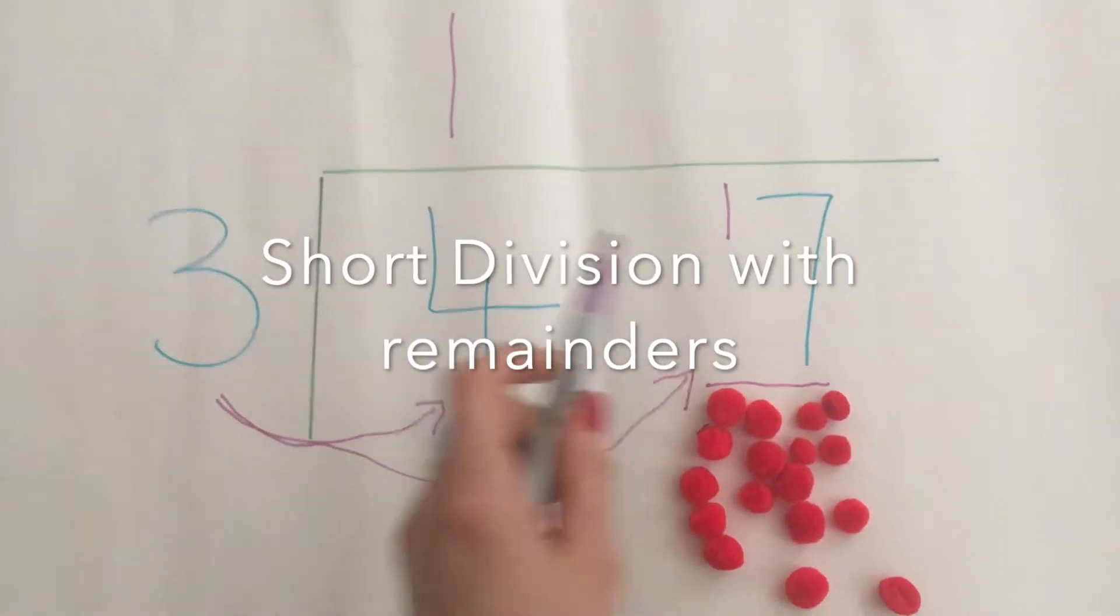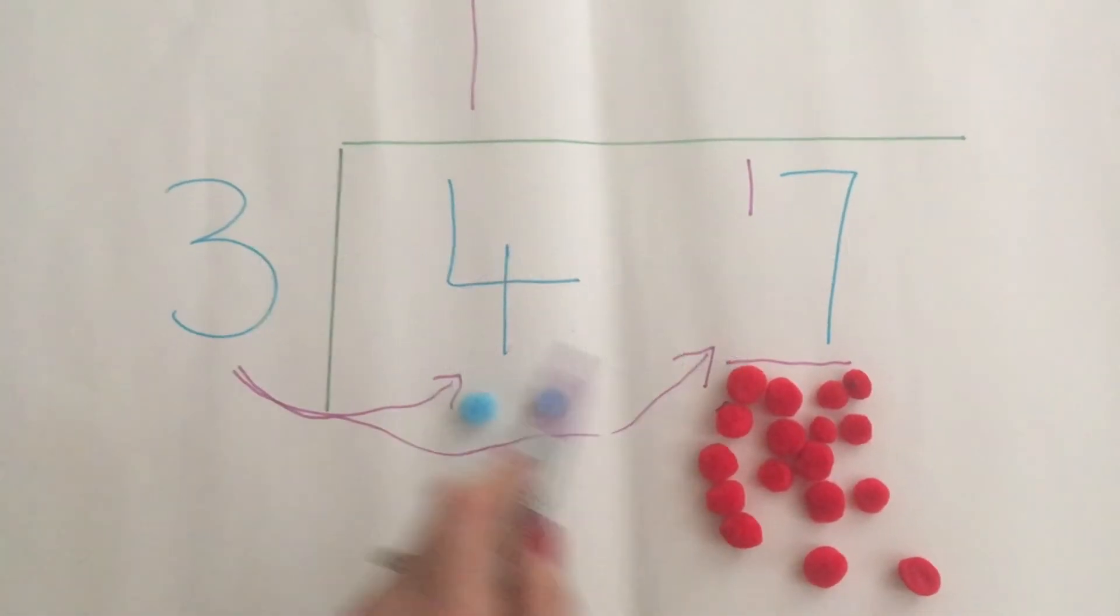Short division with remainders. I'm using my pom-poms to represent my tens and my ones. I'm using blue pom-poms to represent tens and I'm using red pom-poms to represent my ones.